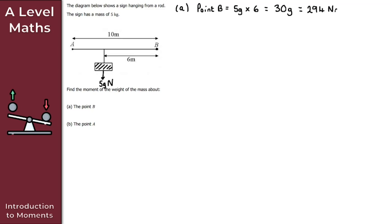Don't forget the units — we're working in meters so it's 294 newton meters. We also need to state the direction of rotation. Imagine holding the rod at point B; pushing the load downwards causes the rod to rotate anti-clockwise. So the answer is 294 newton meters anti-clockwise.